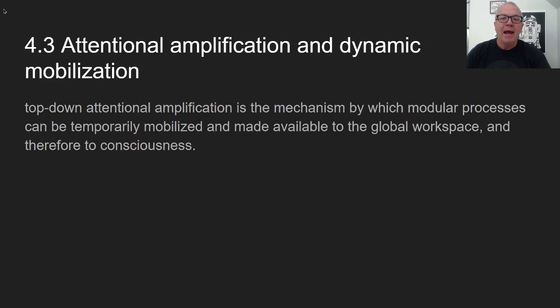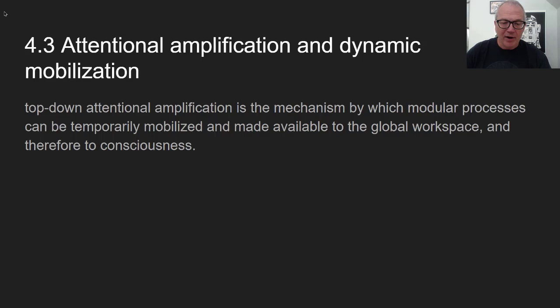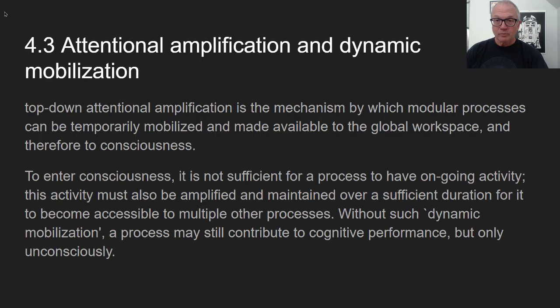Consider neurons with simple primitive functions that recognize shapes in the visual field. That discriminatory pattern then gets broadcast and amplified — for example, when you're looking for a book and you saccade your eyes across objects in a room, discounting pillows and round things, scanning only for squares. That's top-down attentional amplification: the mechanism by which modular processes can be temporarily mobilized and made available to the global workspace and therefore to consciousness.